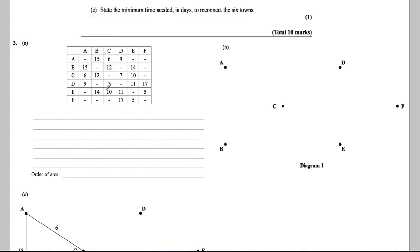We start at A. We circle the column headed A and call it number one, then cross out everything in row A. Looking down the numbered column, we find the smallest value, which is 6. So A to C is our first arc, with a weight of 6.